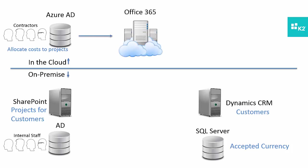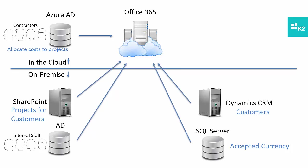To collaborate, contractors will take advantage of Office 365. Within that Office 365 environment, we're going to surface information from our on-premise environment to help contractors use the data appropriately — select the correct customers, see the projects, choose internal staff for approvals, and select accepted currencies. When selecting currencies, we also want to use some cloud information, for example a currency conversion service to convert back to Australian dollars.